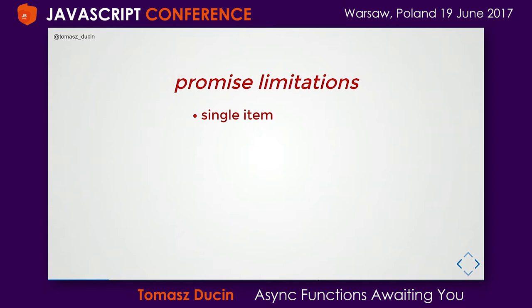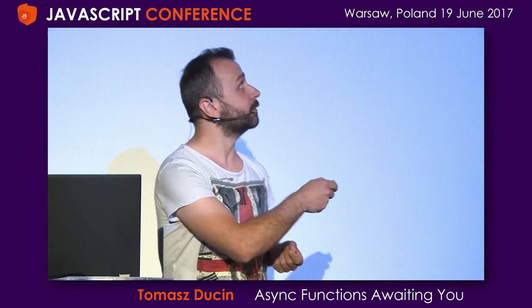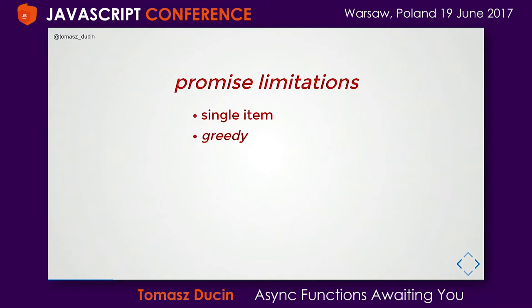Another thing is that promises are greedy — if we have a promise in a variable, it's already running, and there is no way to cancel it. Comparing to RxJS streams where we can cancel a subscription before an event appears, in promises, if we register a then and the promise has not settled yet, we cannot cancel it. There is just no way to do it.